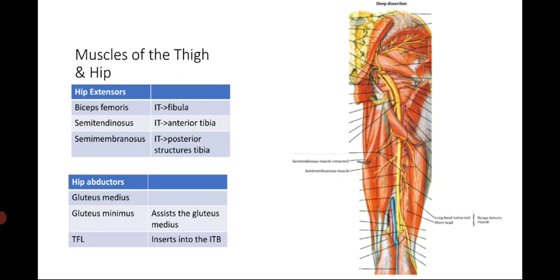Next, we have the hip extensors — three of them: the biceps femoris, semitendinosus, and semimembranosus, each with different insertions. The biceps femoris inserts into the fibula. The semitendinosus, which looks like a tendon, inserts into the anterior tibia. The semimembranosus, which is flat-shaped compared to the semitendinosus, inserts into the posterior structures of the tibia.